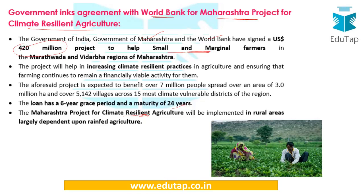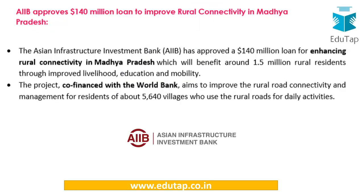The government is also pushing in the United Nations to declare 2018 as the World Millet Year. Another important news: AIIB — the Asian Infrastructure Investment Bank — is going to provide a loan to improve rural connectivity in Madhya Pradesh. This scheme will also be co-financed by the World Bank. So much focus is being given to rural connectivity, rural electrification, organic farming, and climate-resilient agriculture, highlighting the importance of villages and rural economic activities.